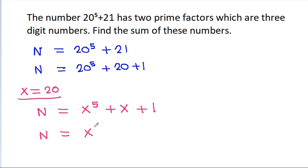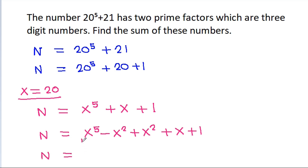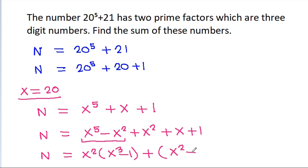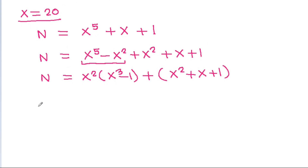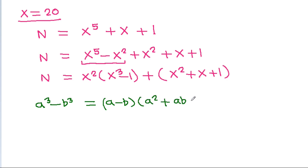To factor x to the power 5 plus x plus 1, if we subtract x squared and add x squared plus x plus 1, then n is equal to x to the power 5 minus x squared, which is x squared times (x cubed minus 1), plus x squared plus x plus 1. Using the identity a cubed minus b cubed equals (a minus b)(a squared plus ab plus b squared).